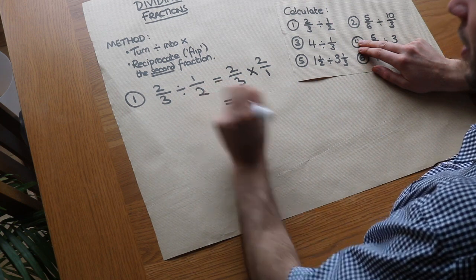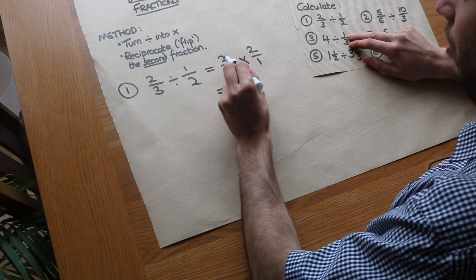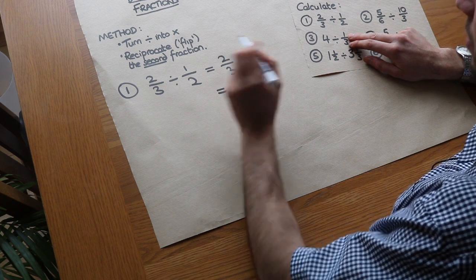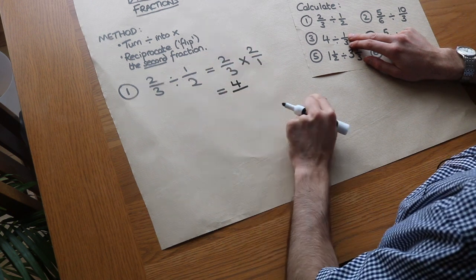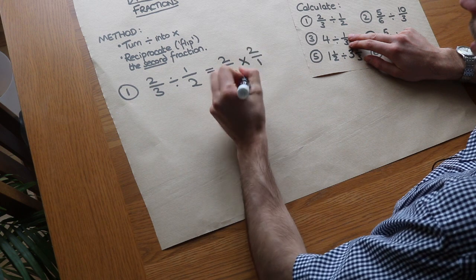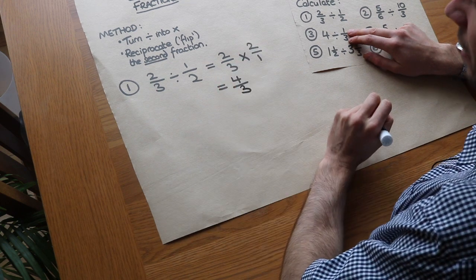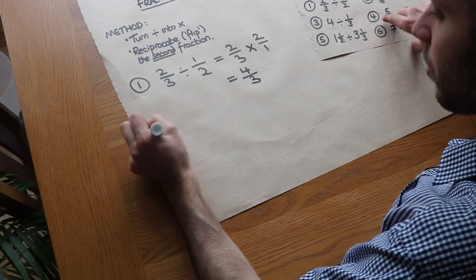From the previous video we should know how to multiply fractions, so we just multiply the numerators: 2 times 2 is 4, and multiply the denominators: 3 times 1 is 3. So we get 4/3. What about the second one?